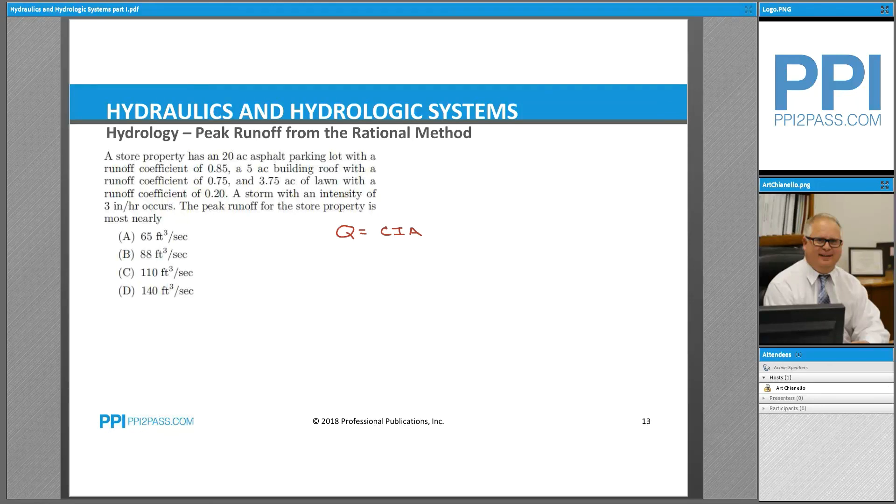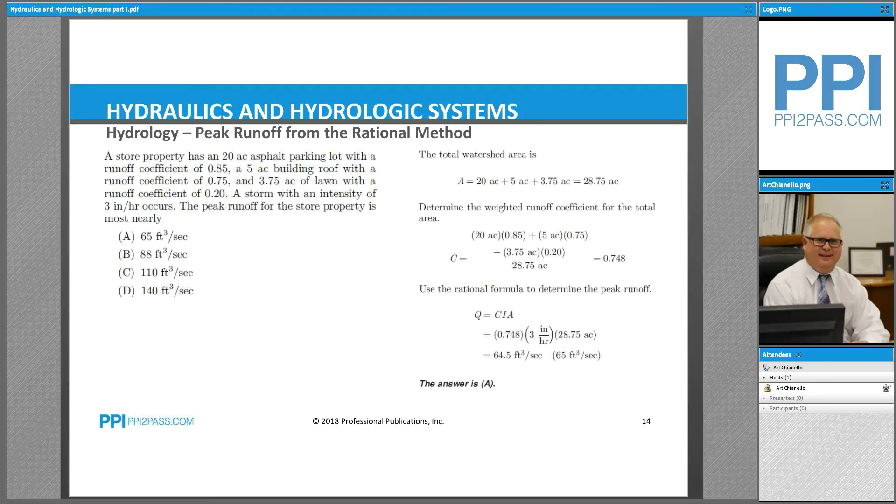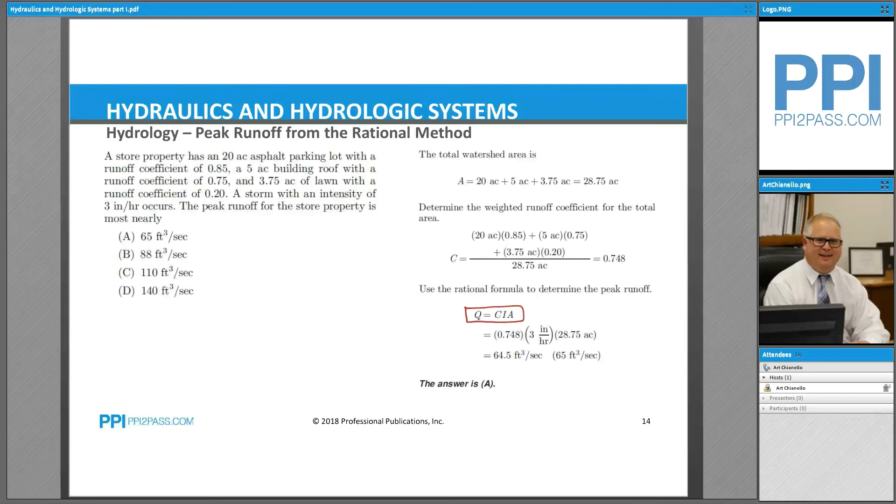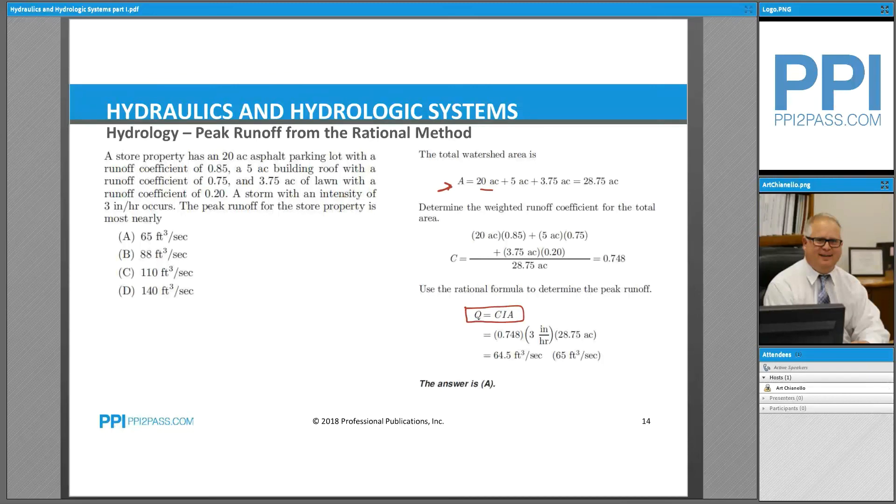Let's take a look at the solution here. This is the basis of our solution, the rational formula Q = CIA. First, they're calculating the total area in acres. That was a 20-acre asphalt parking lot, a 5-acre building roof, and 3.75 acres of lawn, so we have 28.75 acres total.